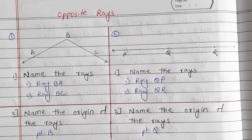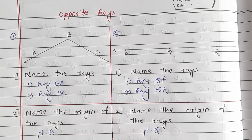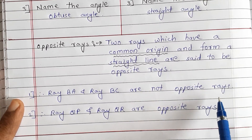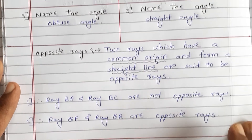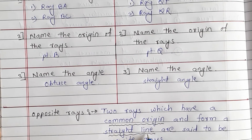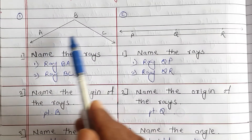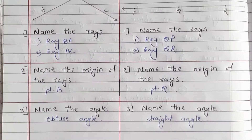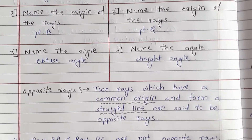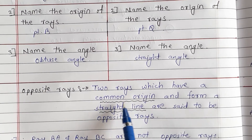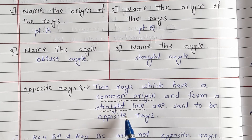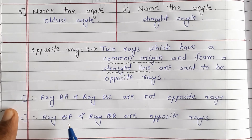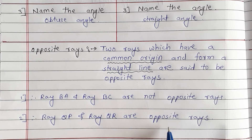So opposite rays means Ray BA and Ray BC are not opposite rays because they do not form a straight line. Give reason: Ray BA and Ray BC are not opposite rays. Ray QP and Ray QR are opposite rays.